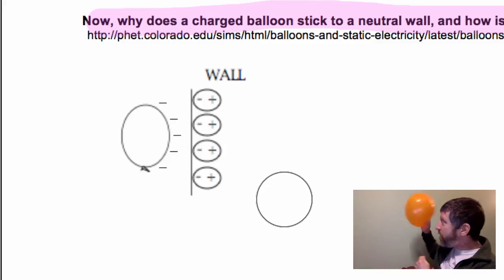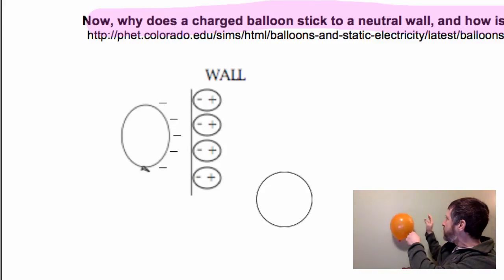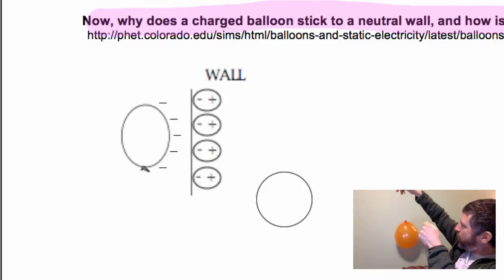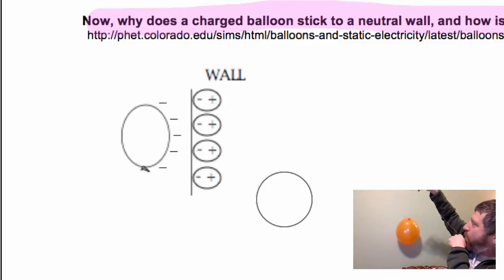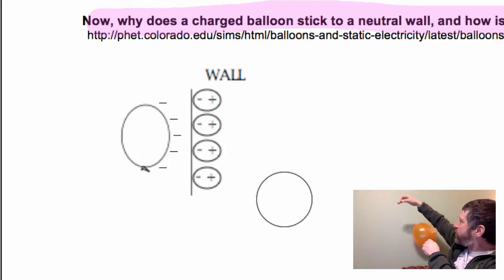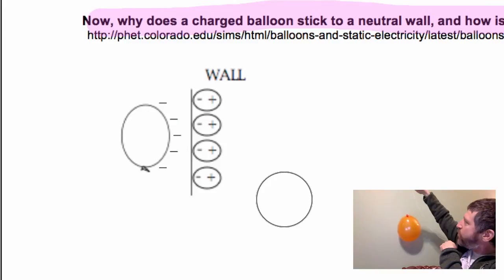And it will even stick to an insulating wall. Even though the electrons never leave the atoms, that is sticking. You can see that, even though I'm pulling it away, it wants to stay with that wall because even though the electrons are still stuck in those atoms in that wall, they're just moving to the other side of the atom, which is enough of a difference of distance to make this thing attract.